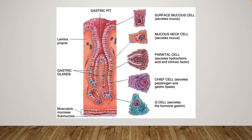Here is a summary of these cells: mucus cells, parietal cells that secrete hydrochloric acid and intrinsic factor, chief cells that secrete pepsinogen, and G cells that secrete the hormone gastrin. We'll talk about gastrin in more detail later.